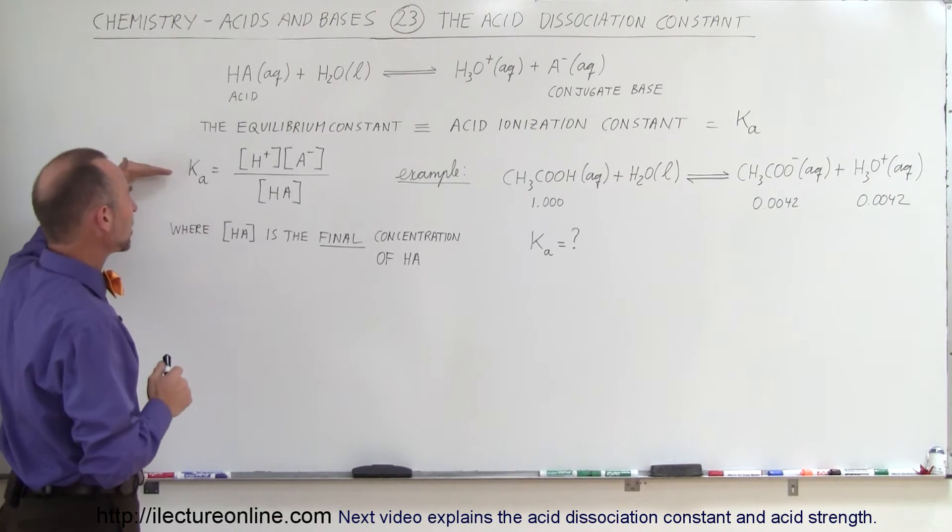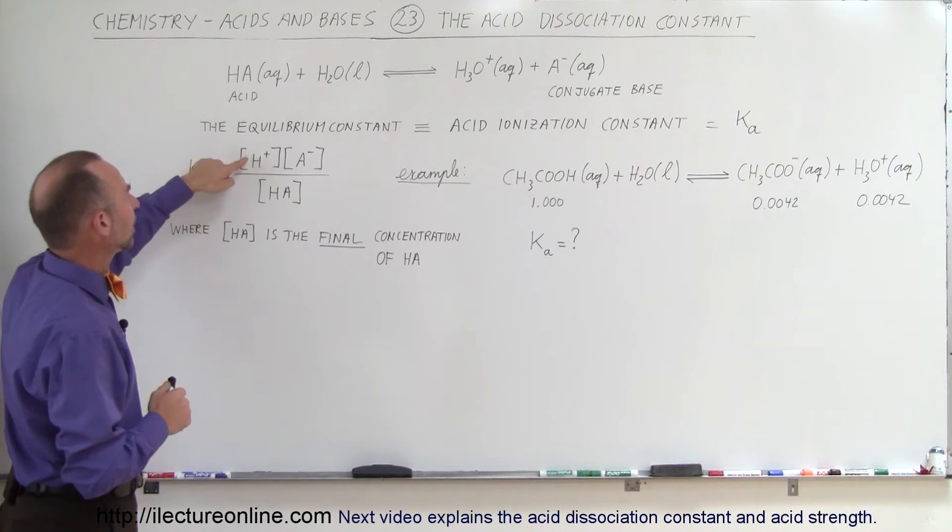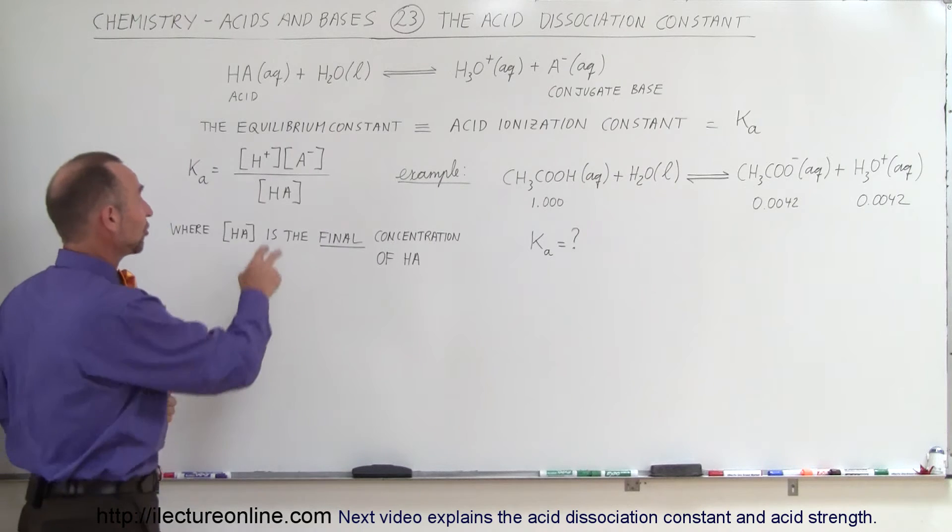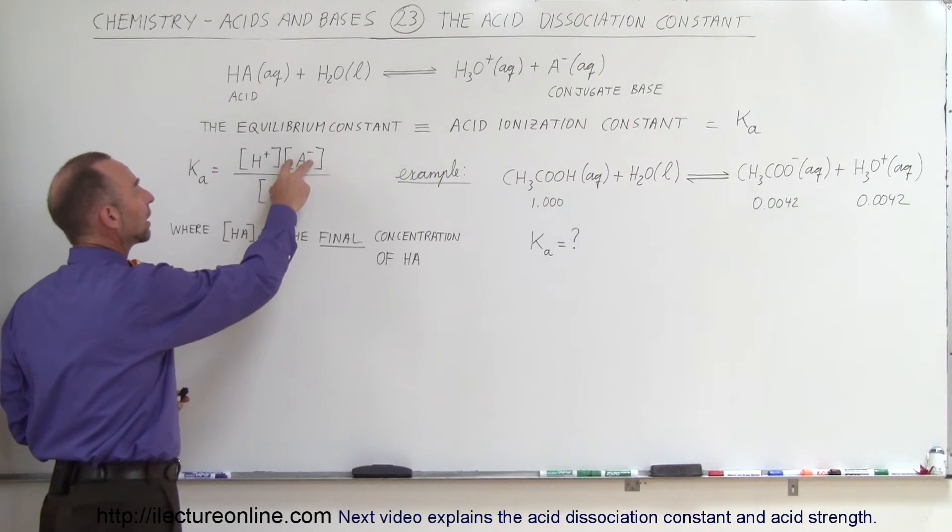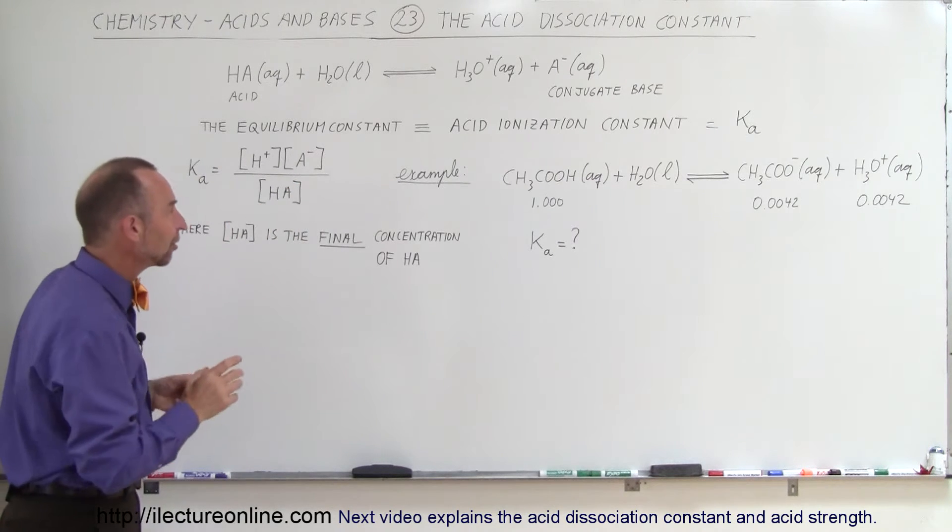Here's the equation that determines the acid dissociation constant. You take the concentration of the hydrogen ion, which is the same as the concentration of the hydronium ion, and the conjugate base, the concentration of that, and divide by the concentration of the acid.